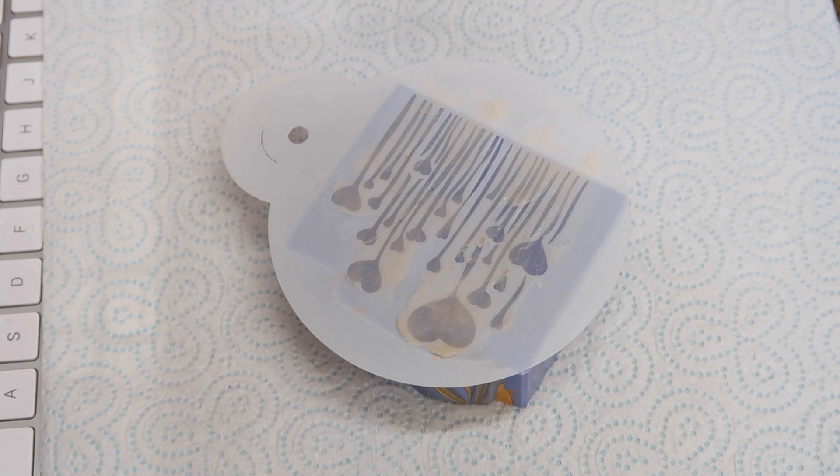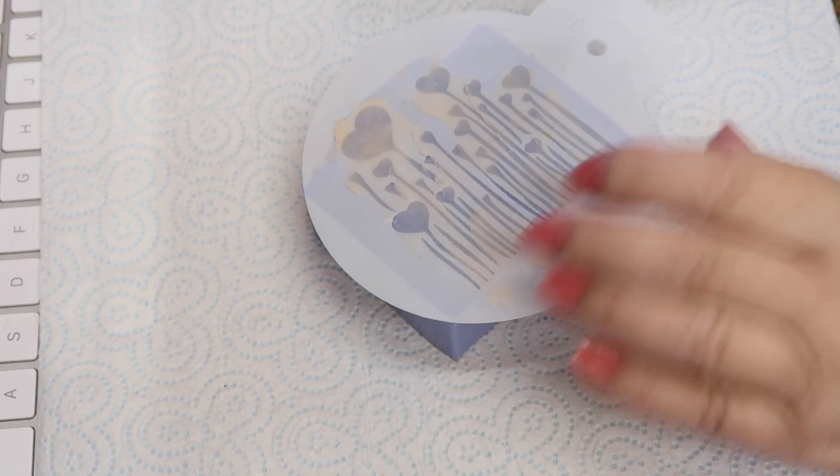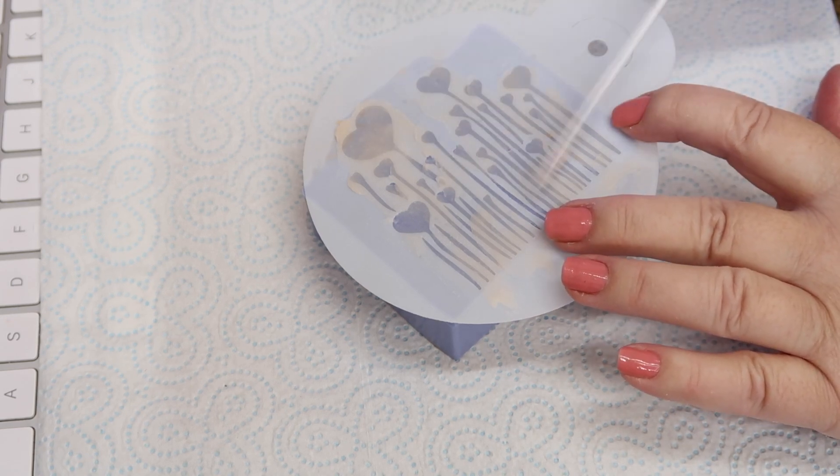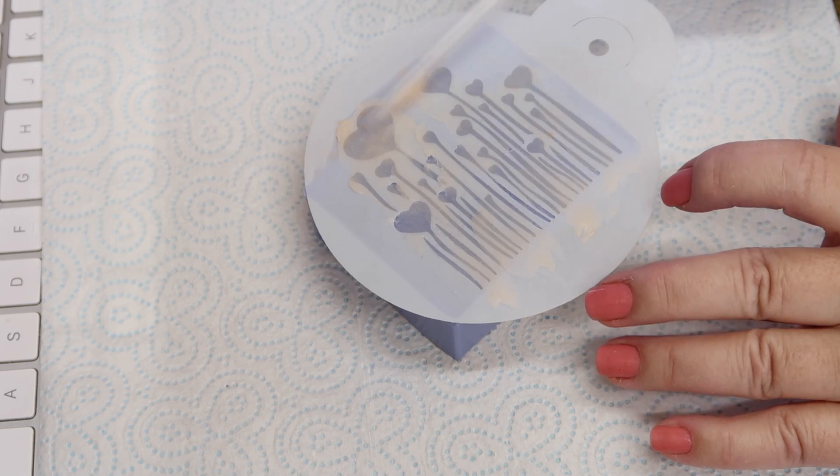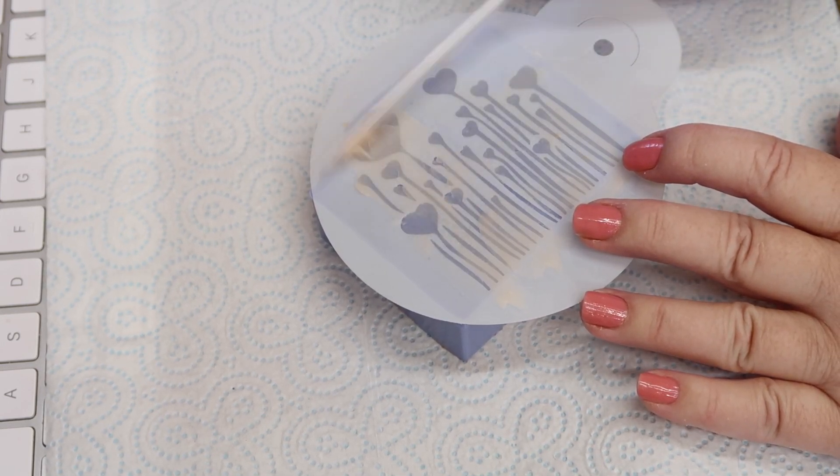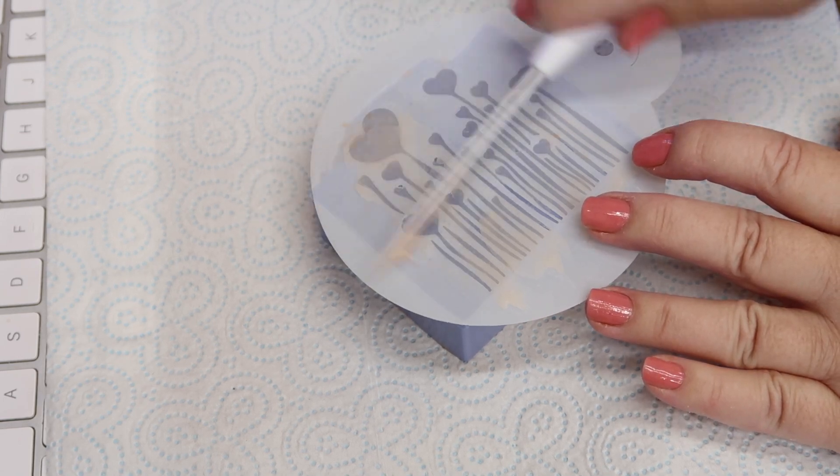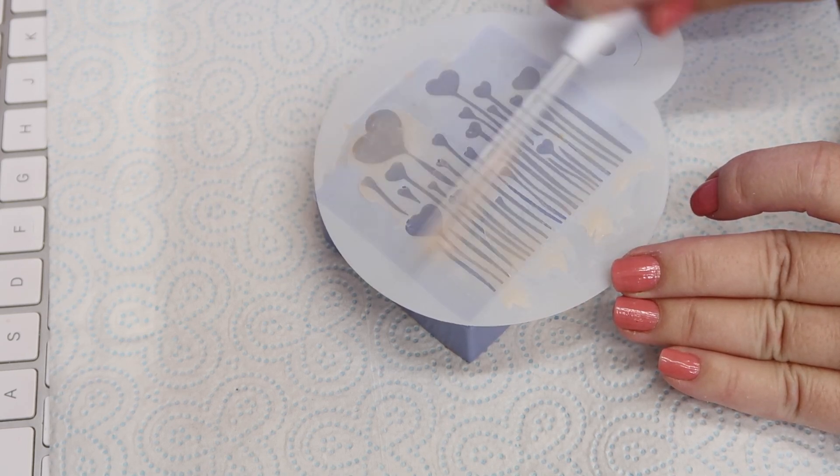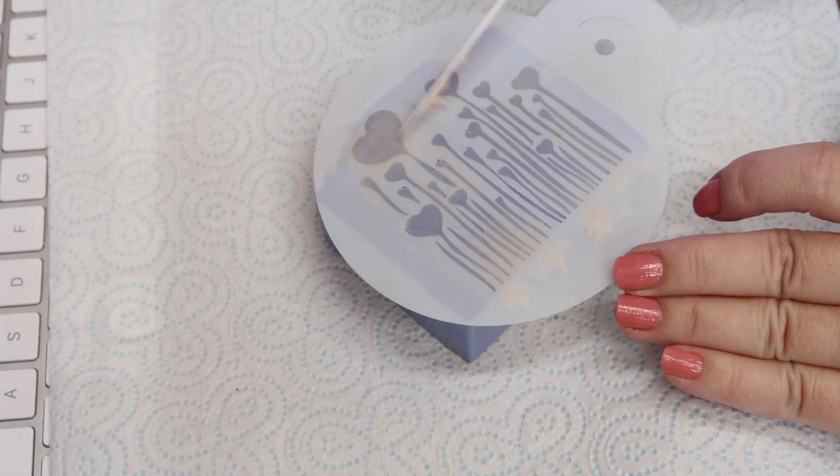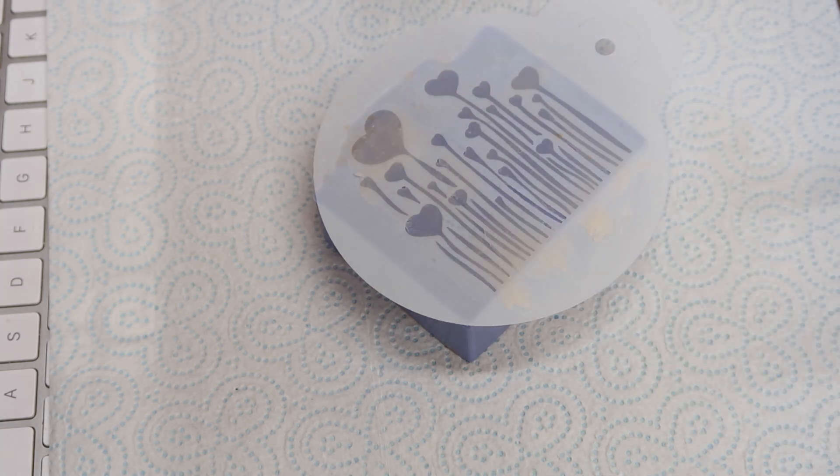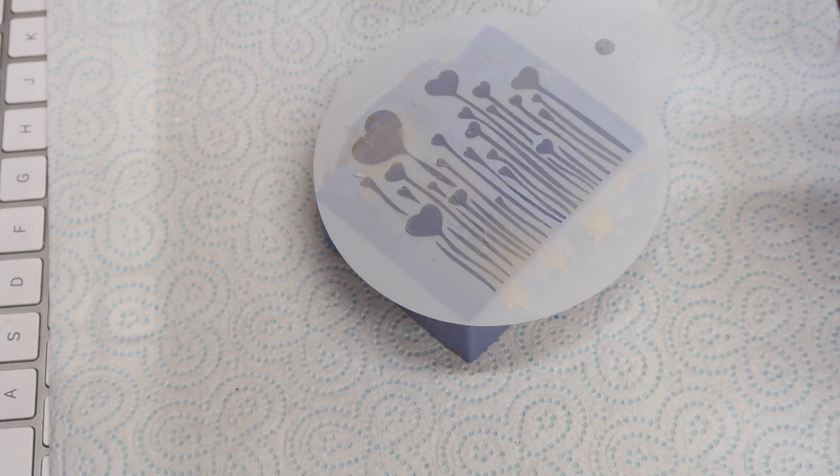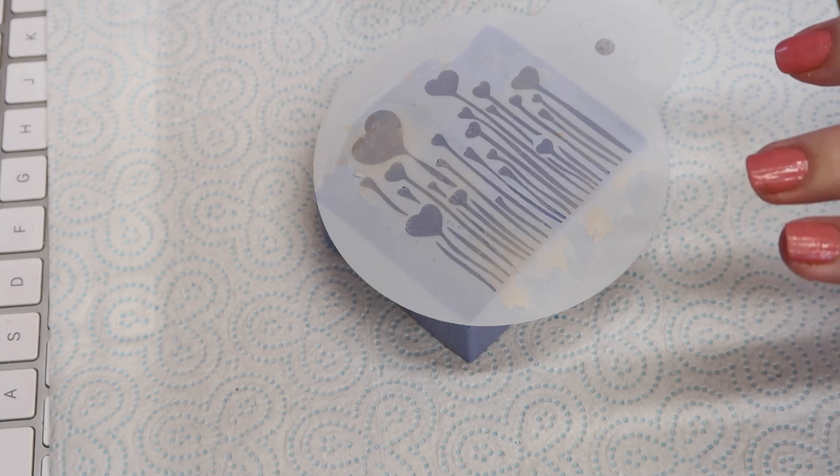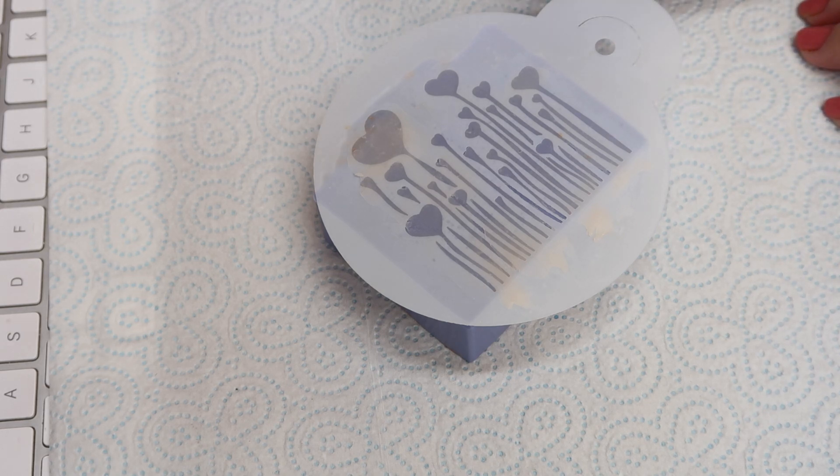So then just take a blade, preferably a flat blade will work better, this one's a little bit curved. You don't want to scrape too much of that soap off, hence don't put too much on. Because if you put too much on, too much seems to want to come off. If you just put a little thin layer, then it tends to come off a lot easier.